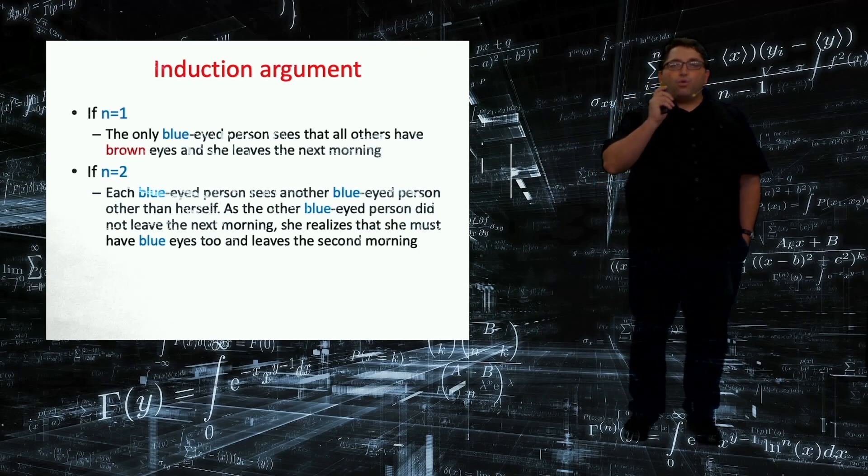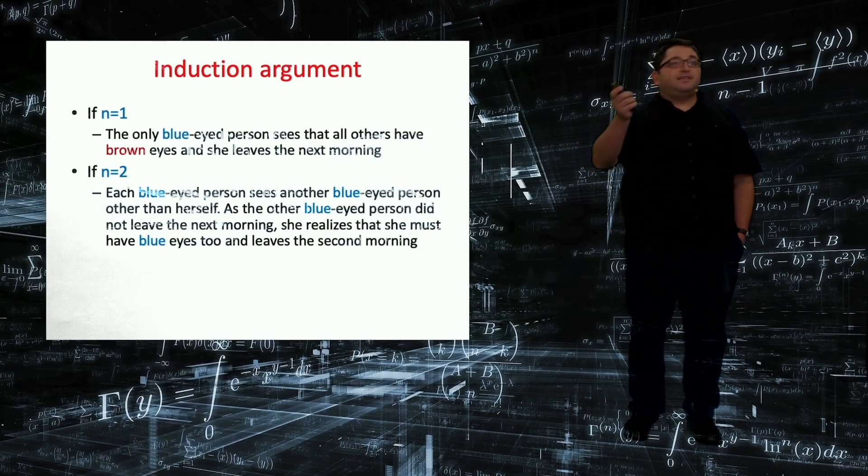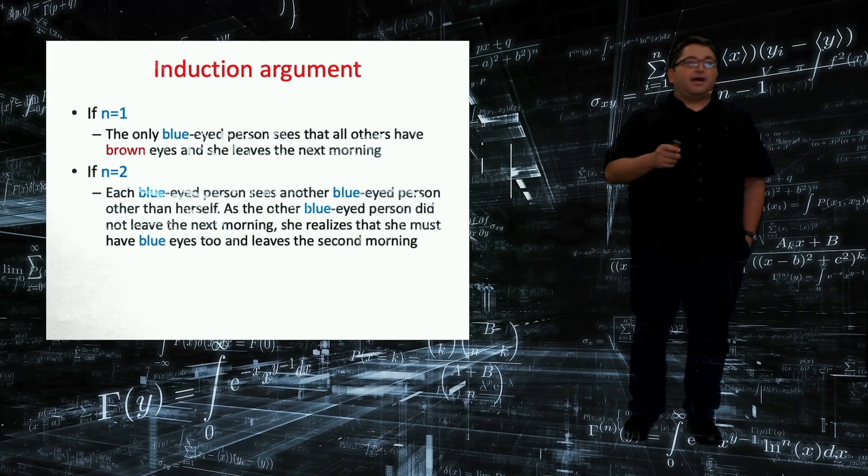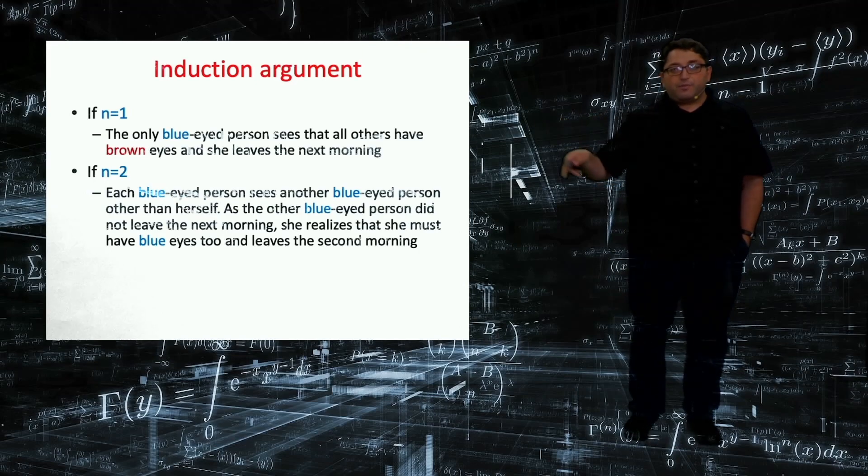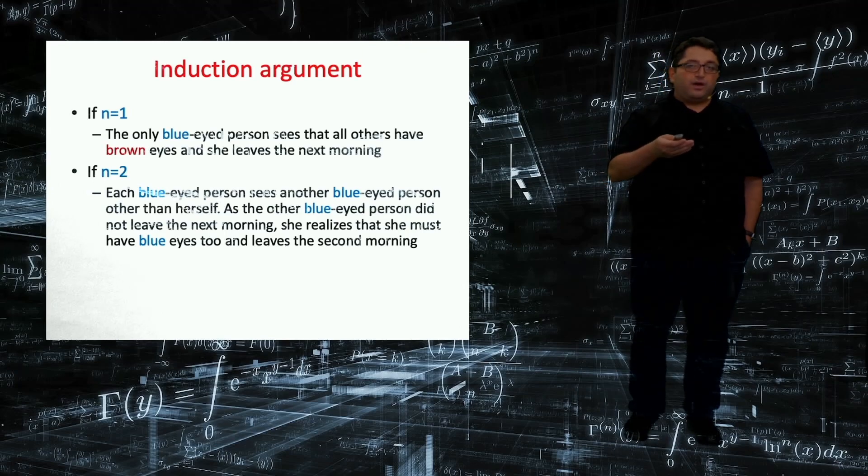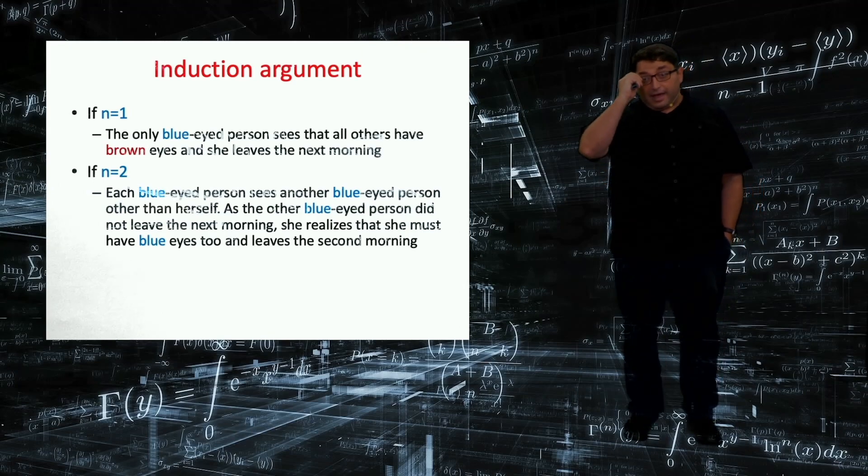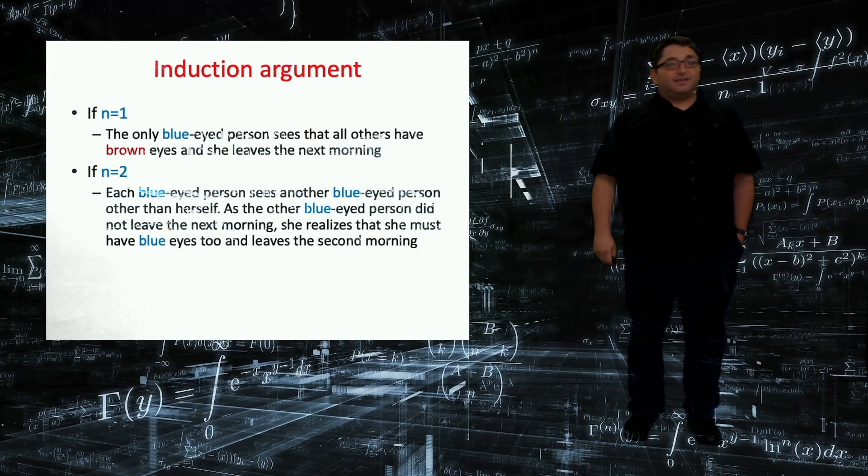Okay, if the other person was the only blue-eyed person, he would leave the island next morning. If I see that he is not leaving the island next morning, then he cannot be the only blue-eyed person. Because everybody else has brown eyes, which I observe, that means that I should have blue eyes. So myself and the other blue-eyed person should leave the island after two days.